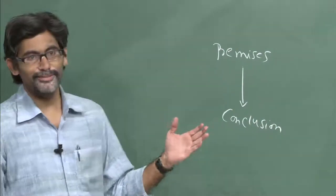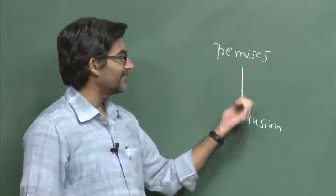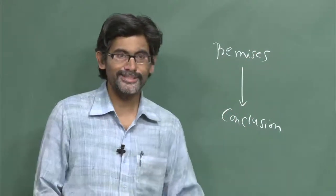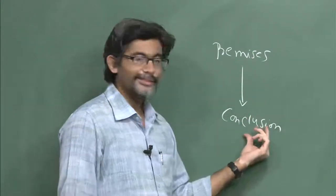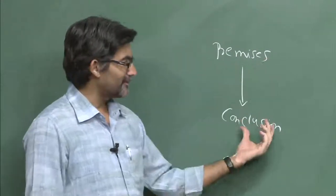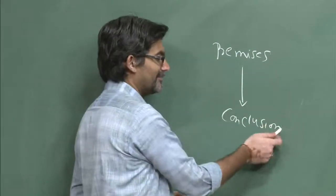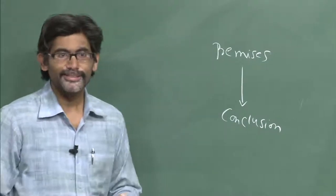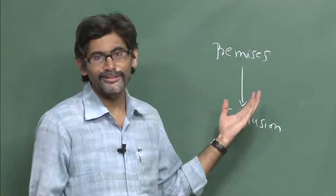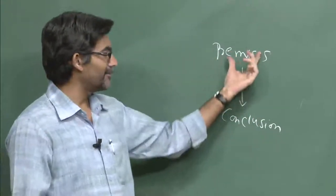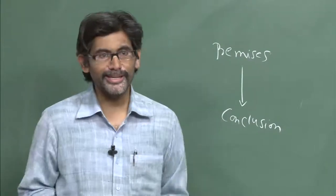In all the examples we encountered, the layout of an argument has some premises — identified using premise indicators — which provide reasons to support the conclusion. Premises give support to the conclusion; this is what we commonly use in formal logic. Validity tells us how premises lead to the conclusion.